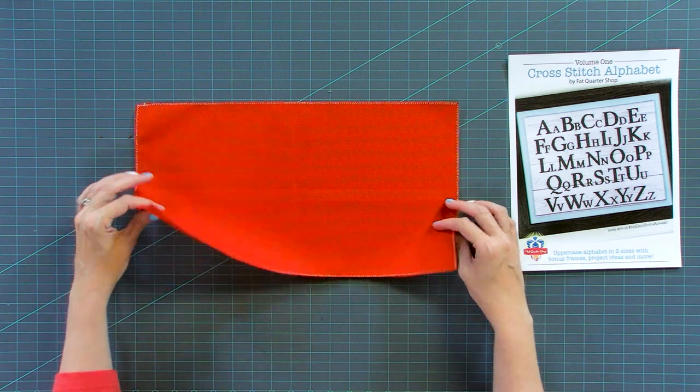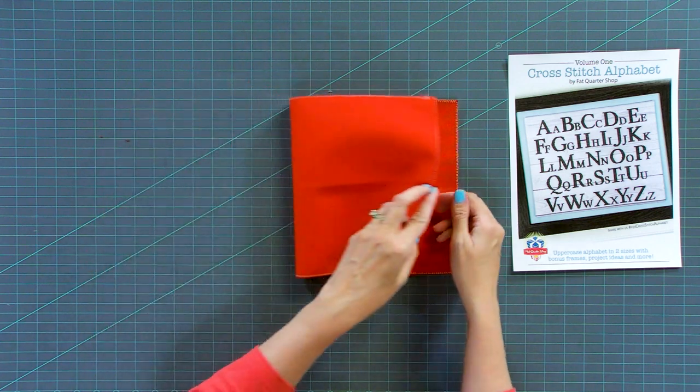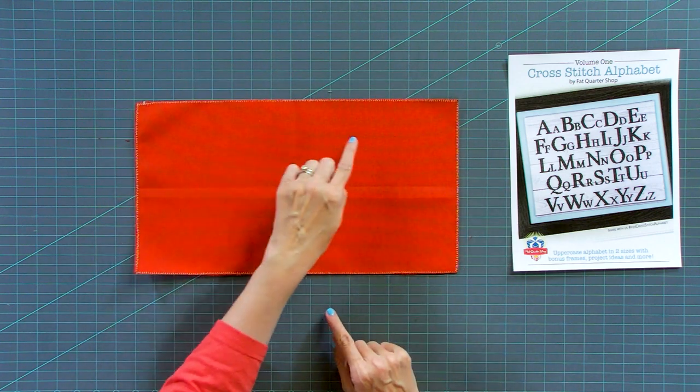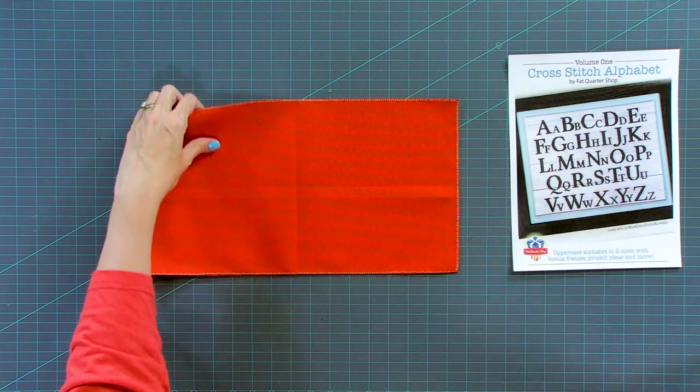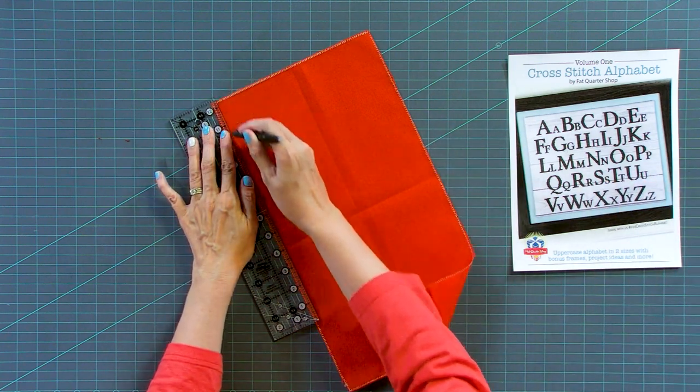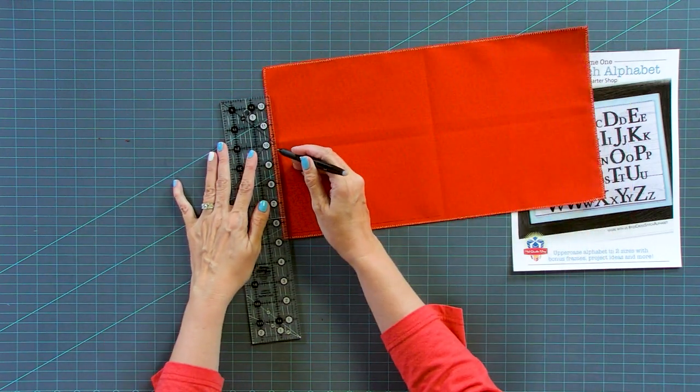From here, you're gonna fold it in half and finger press. Then you're gonna fold it the other way and finger press. And so now you have four quadrants. You're gonna stitch on this one. To do that, I'm gonna use a friction pin. This is gonna be your seam allowance right here. So visually, you can see where to place your stitches.